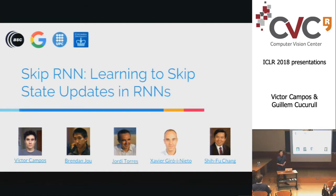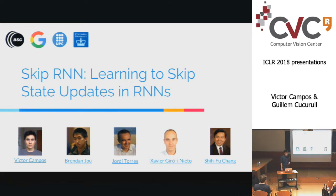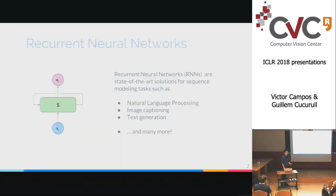Good morning. I'm going to talk about the iClear paper called Skip RNN, which is an RNN model that's able to skip some state updates. This is co-authored with Brandon Ju from Google, my advisors Jordi Torres from BSC and Chavigiro from UPC, and Shifu Chang from Columbia University. To motivate this work, let me first introduce recurrent neural nets.